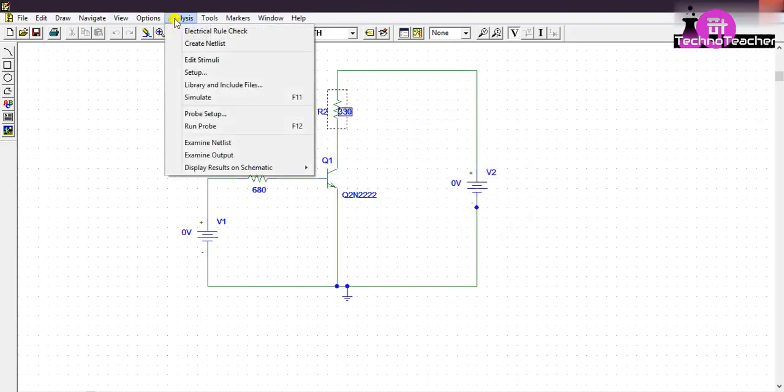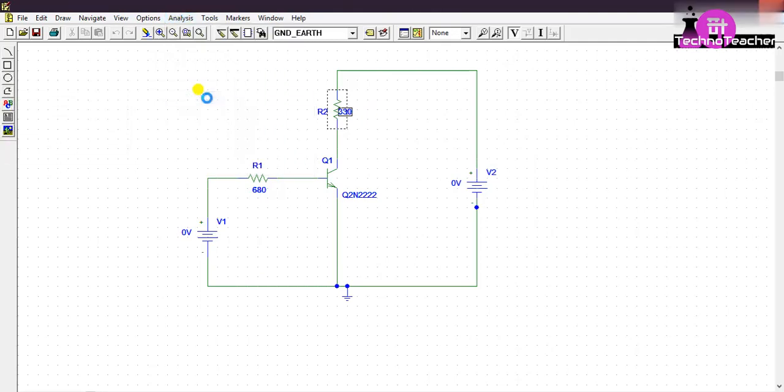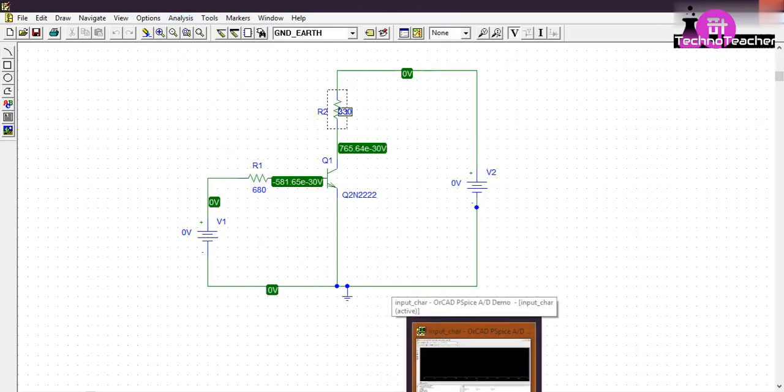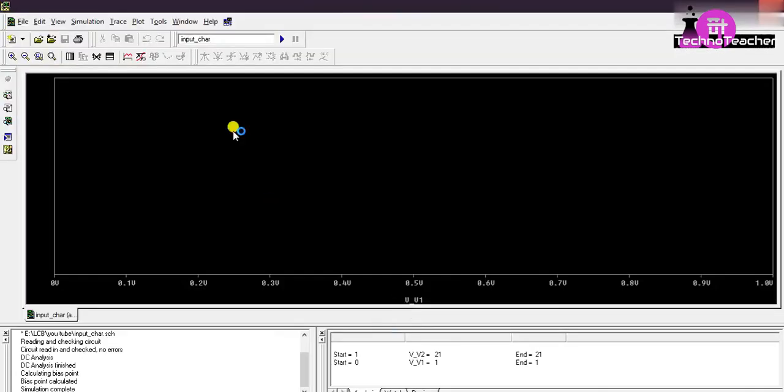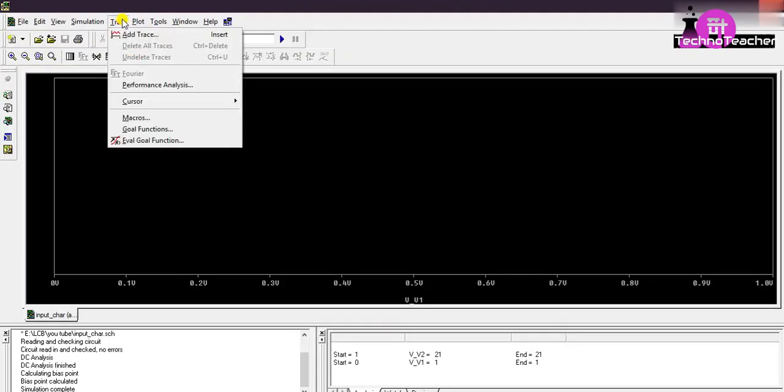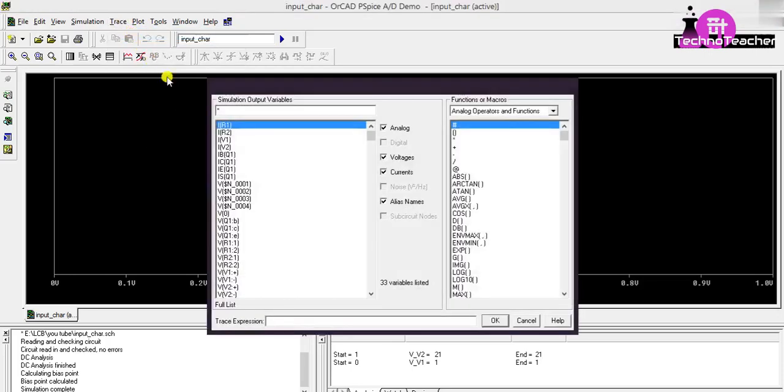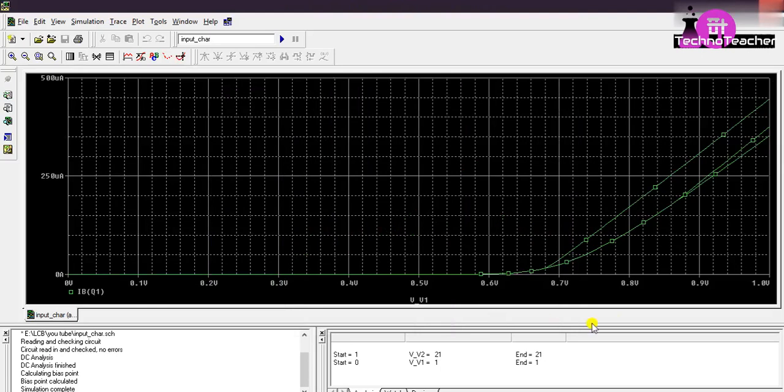Then go to Analysis, simulate. Now a new window will appear. Click on that window, then go to Plot, add. Press select on IB because IB is the input current. Click on OK. This is the input characteristics of BJT in common emitter configuration. That's it. Okay, this is it for the next one.